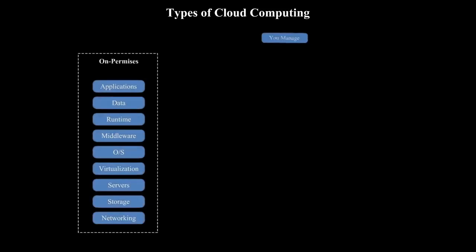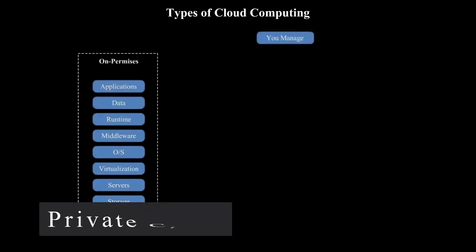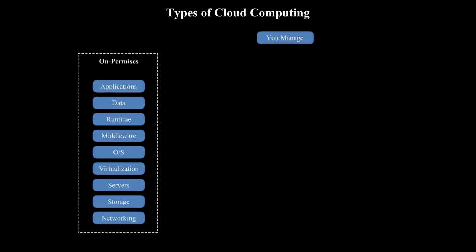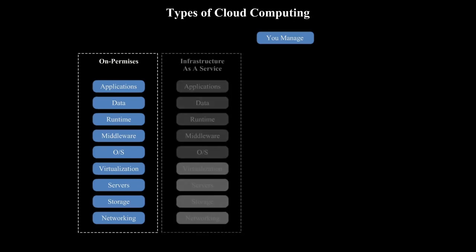Back to the cloud types — we have private cloud. A private cloud is owned and operated by a single organization, and only that organization uses it, which means the organization is responsible for the costs of building and maintaining the infrastructure. This means that operating expenses and capital expenditures are usually higher for private cloud customers because they have to invest in and maintain their own infrastructure.